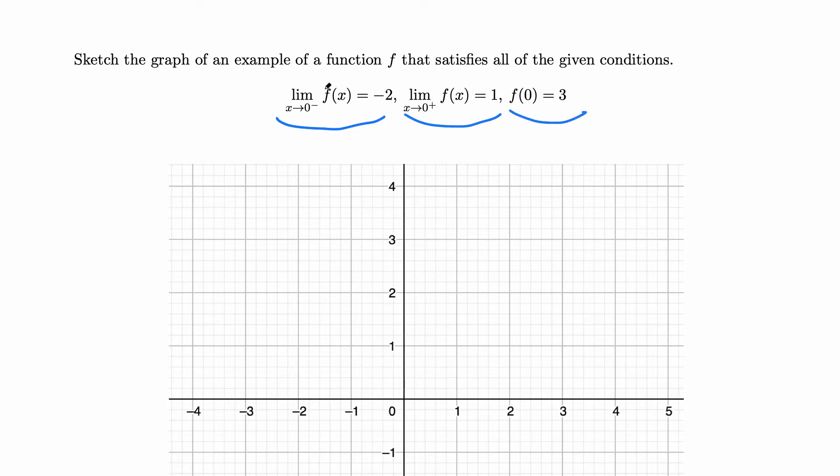The limit of the function as x approaches 0 from the left is -2. That means when x approaches 0 from the left, f approaches -2, and when x approaches 0 from the right side, f approaches 1. The exact function value at 0, f(0), is 3.